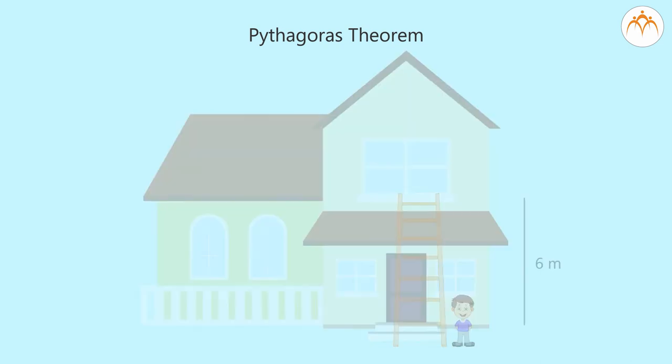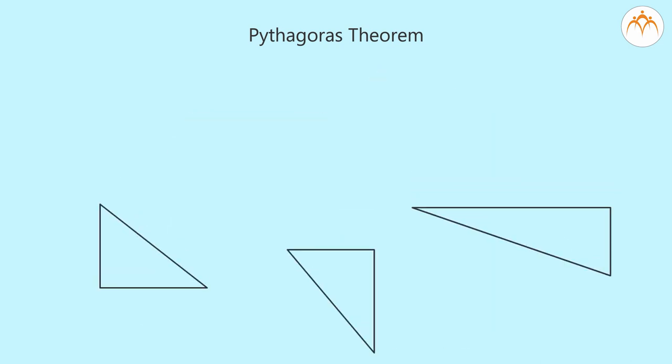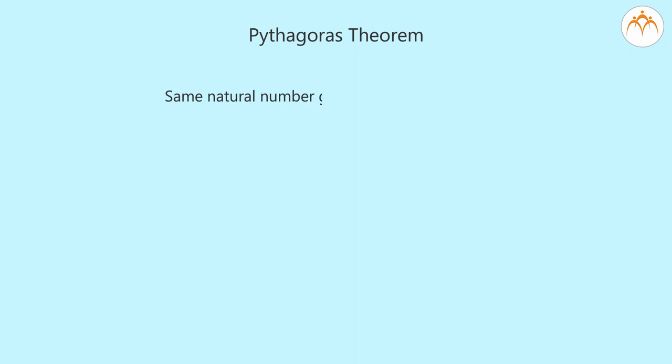We have seen some right angled triangles with all the sides integers such as 3, 4, 5, 5, 12, 13, 8, 15, 17 and so on. These are called Pythagorean triplets. If we have a Pythagorean triplet, then multiplying each integer of the triplet by same natural number gives a Pythagorean triplet.